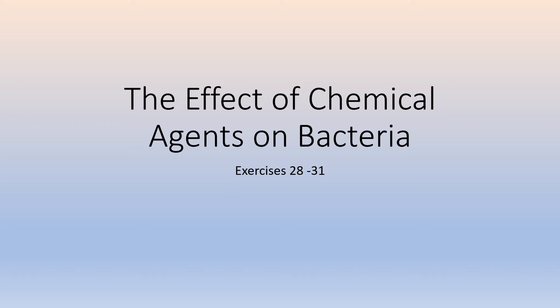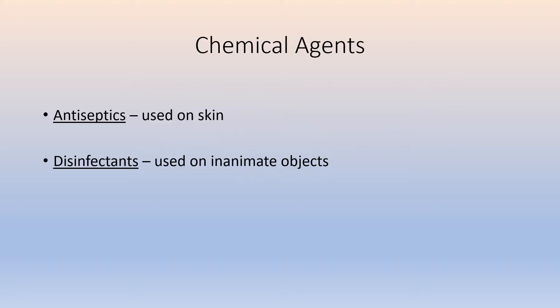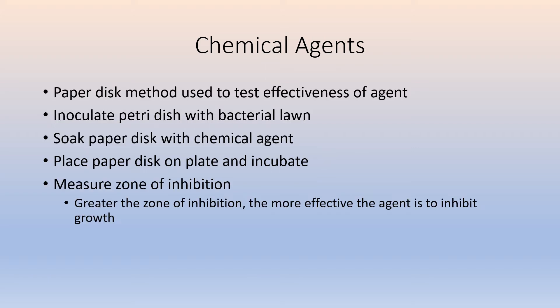Exercises 28 through 31 look at the effects of chemical agents on bacteria. Chemical agents can be any type of chemicals classified as either antiseptics or disinfectants. Antiseptics are chemicals that can be used on the surface of the skin, whereas a disinfectant is used on the surface of an inanimate object. That's how we distinguish them — by what surface you're putting them on.